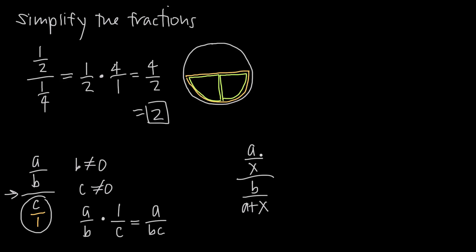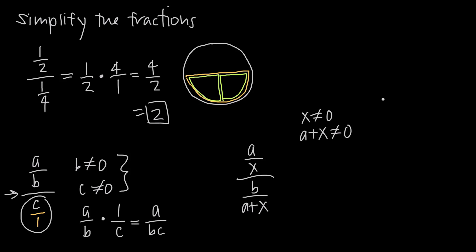Now looking at a third example: we have a over x divided by b over (a plus x). We have our larger fraction, a fraction in the numerator a over x, and a fraction in the denominator b over (a plus x). For our conditions: x cannot equal 0; a plus x cannot equal 0; and the larger denominator b over (a plus x) cannot equal 0. So we indicate all three denominators that way.